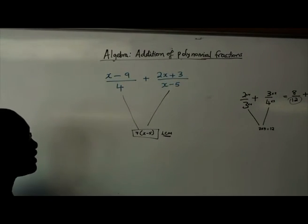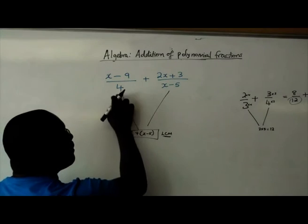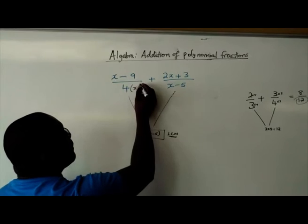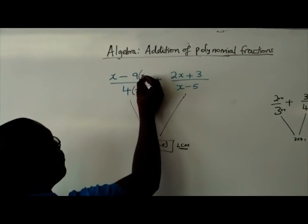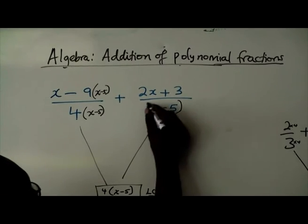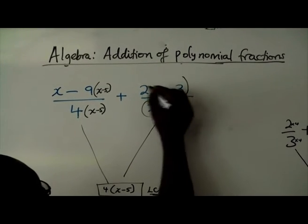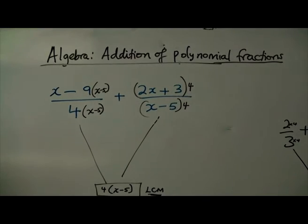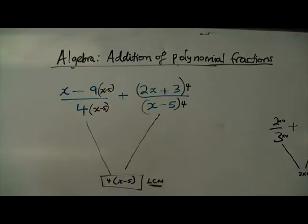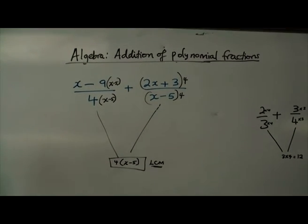For us to achieve a common denominator, I'm going to multiply this side by x minus 5 and I'll multiply the numerator by x minus 5. And then this side I'll multiply by 4 and I'll multiply by 4. The reason being, we want our numerators to be exactly the same. Once we've done that, we can now simplify the top here and also the bottom.